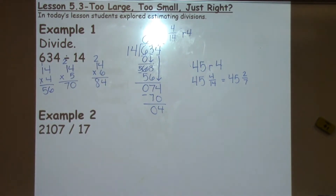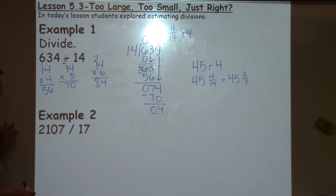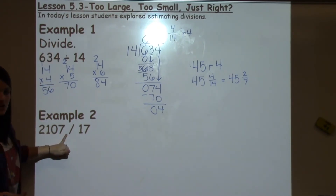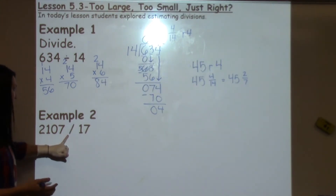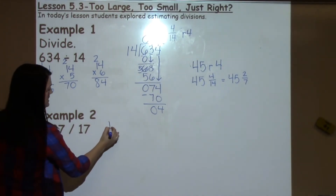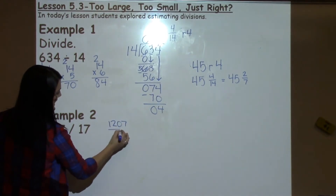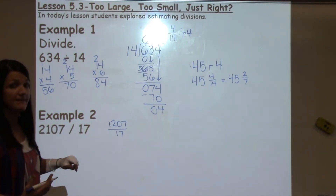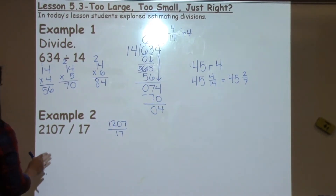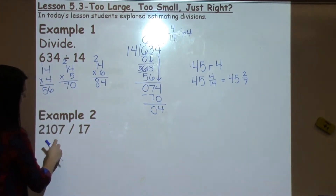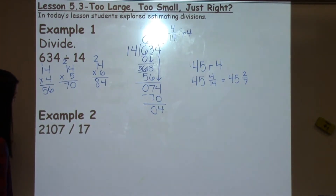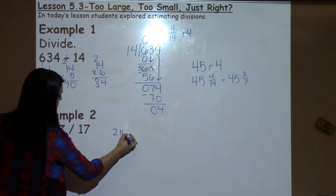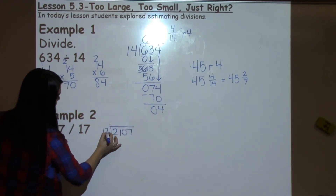Let's look at example 2. You'll notice it uses a different symbol for division — a fraction bar or backslash. In math, students sometimes see this because we want them to remember that any time they're working with a fraction, the top number is being divided by the bottom number. A fraction bar means division, and so does this backslash. So we're going to take 2,107 divided by 17.